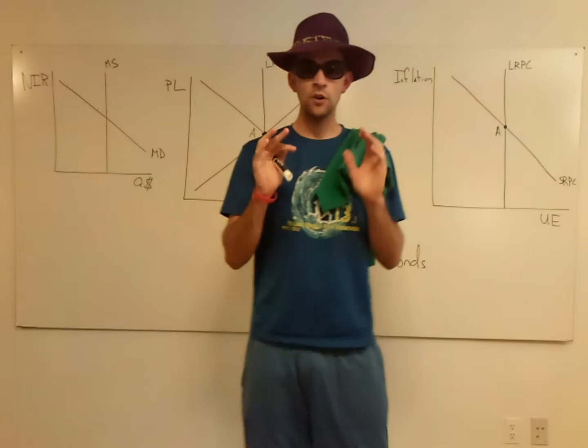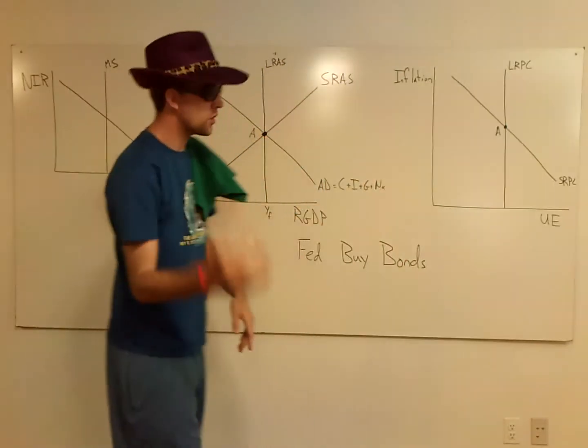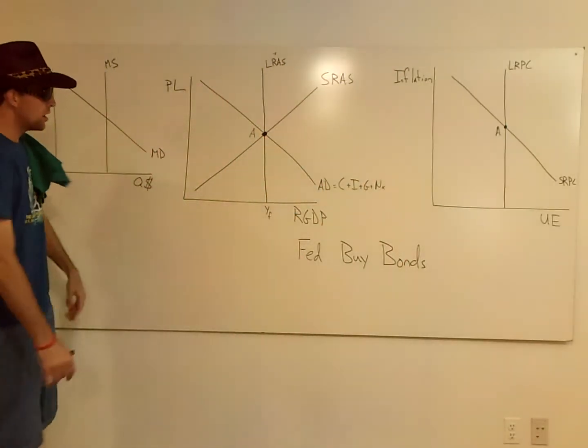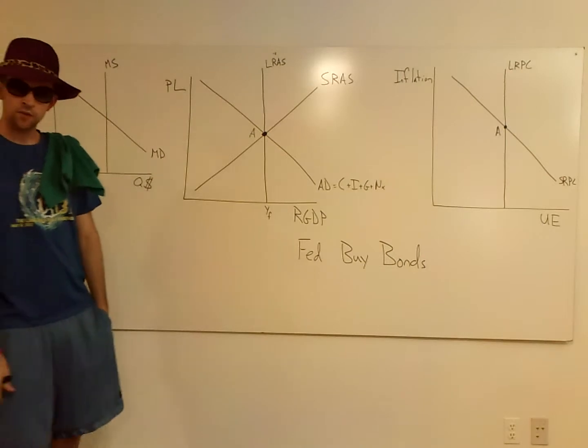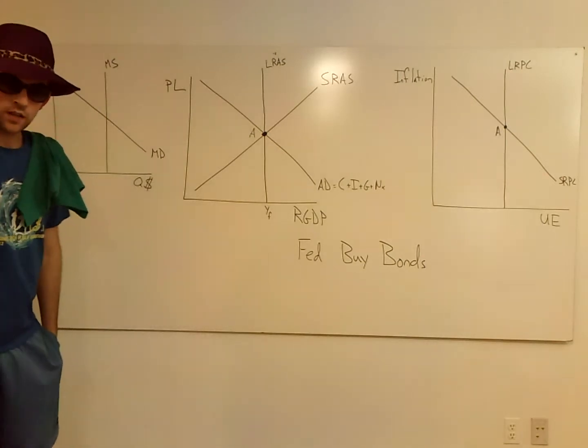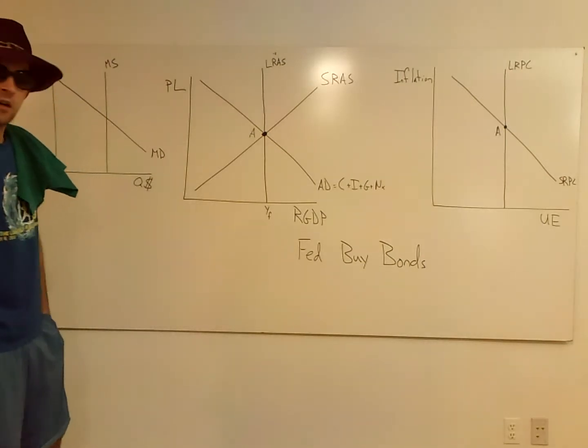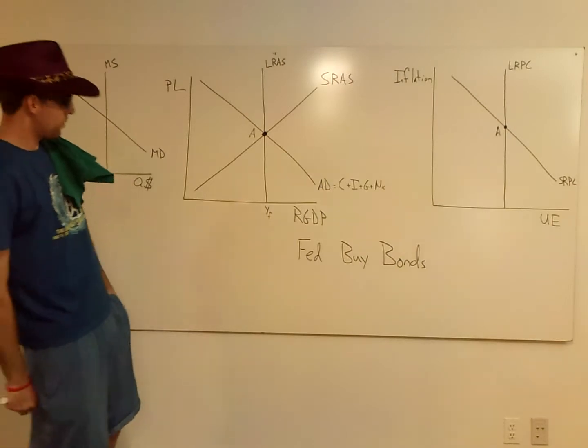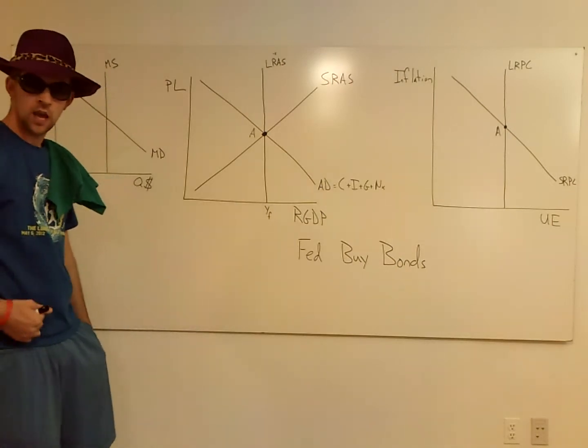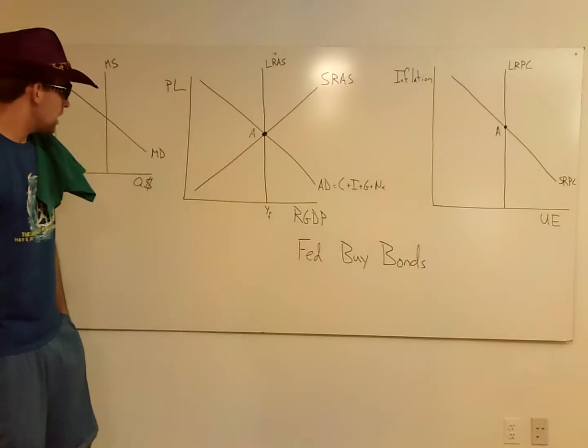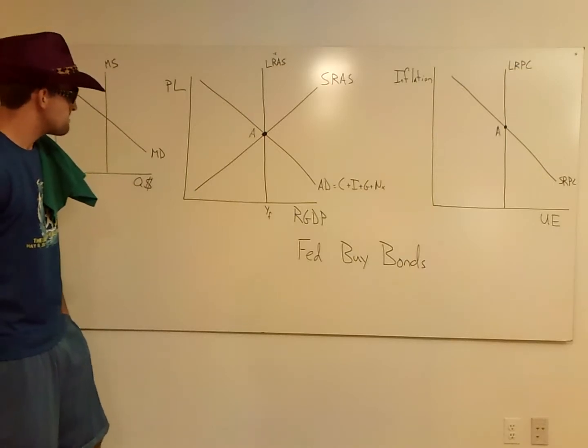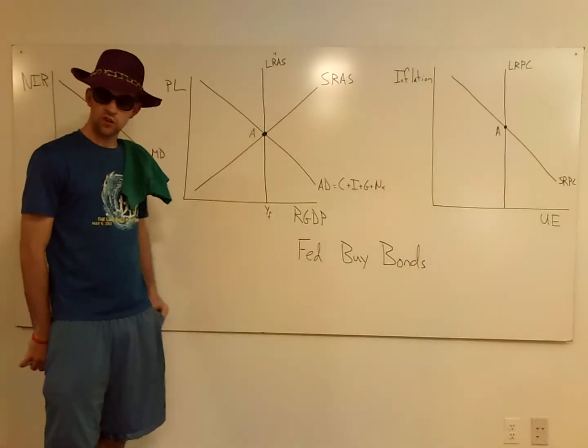Behind me I have three graphs here. I want you to look at the one in the middle first. This here you should recognize as an economy graph. Hopefully you know what type of economy we have here. We have an economy operating at full employment output, or you could say at the natural rate of unemployment. And this is our long-run equilibrium here.